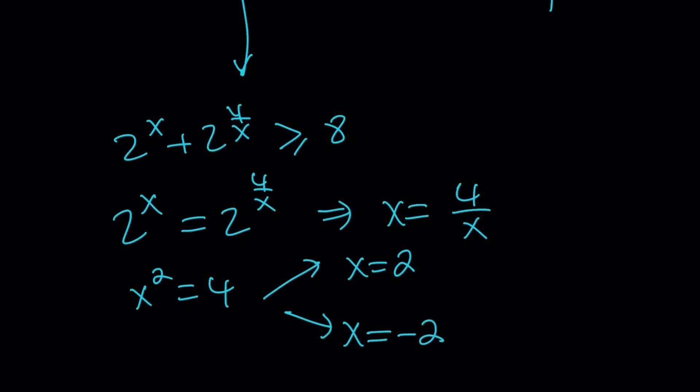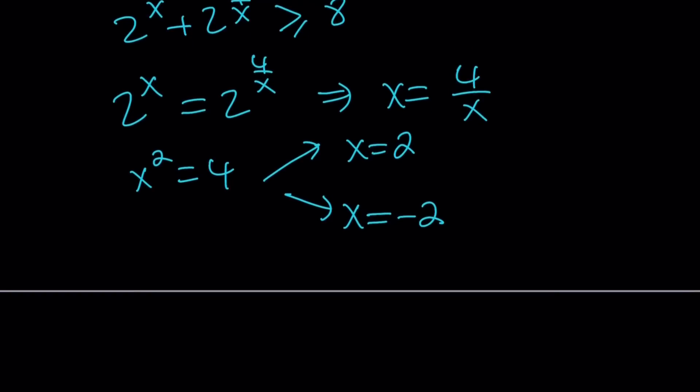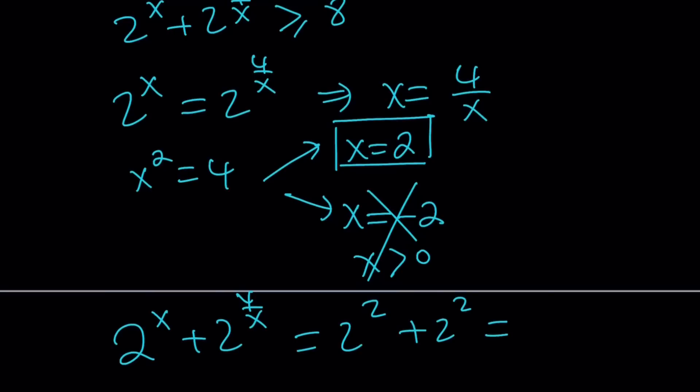But remember what we said about x. We said that x needs to be positive. Therefore, we're not going to consider that solution in AM-GM. So x equals 2 seems to be satisfying this equation. And you can definitely go ahead and check. If you plug in x equals 2, you're going to get 2 to the power of 2 plus 2 to the power of 2, which is equal to 8. So x equals 2 works.